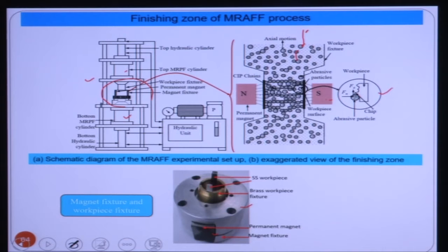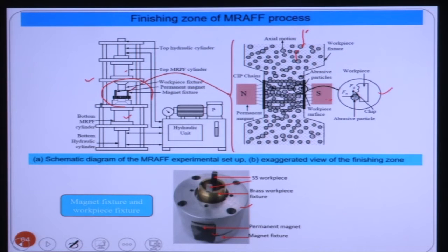Inside the permanent magnet zone, the forces acting include a magnetic normal force and an axial force due to the reciprocating or axial motion of the fluid flowing through the cylindrical fixture at high pressure. There is also a normal force due to the applied magnetic field. The abrasive particles are held in this zone by the carbonyl iron particles. In the finishing zone with applied magnetic field, workpieces are placed. These two flat workpieces are kept diametrically opposite — one in front of the north pole and one in front of the south pole.